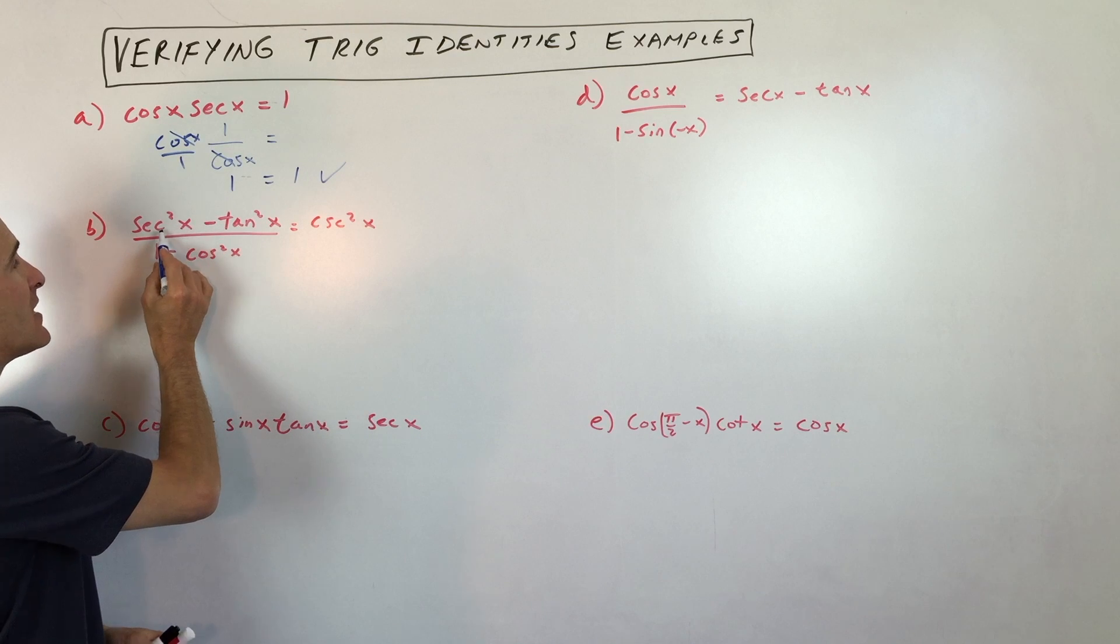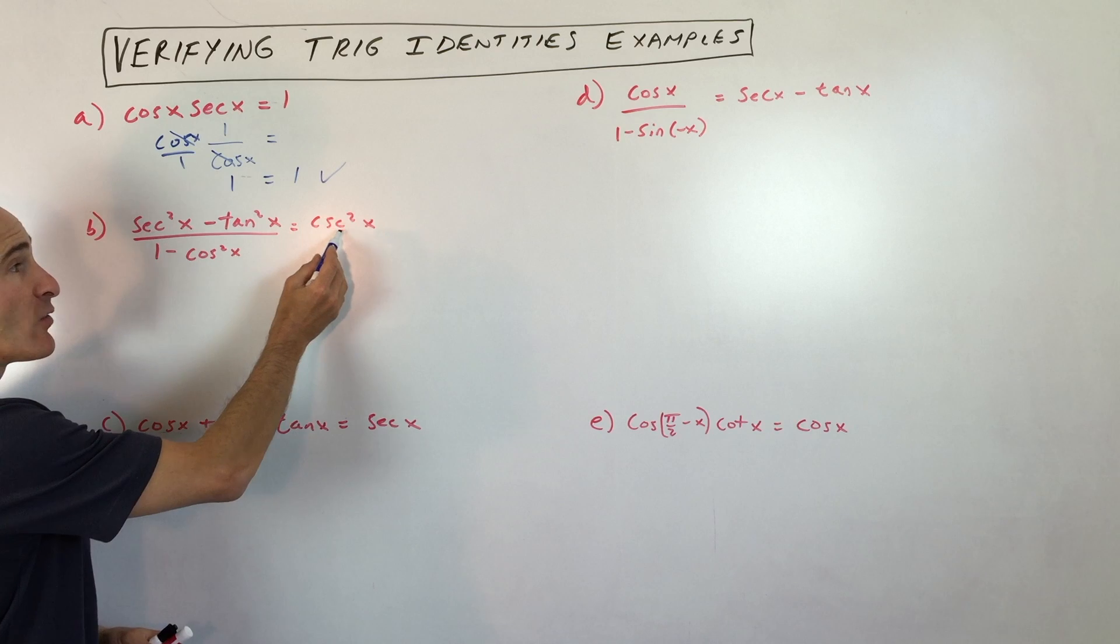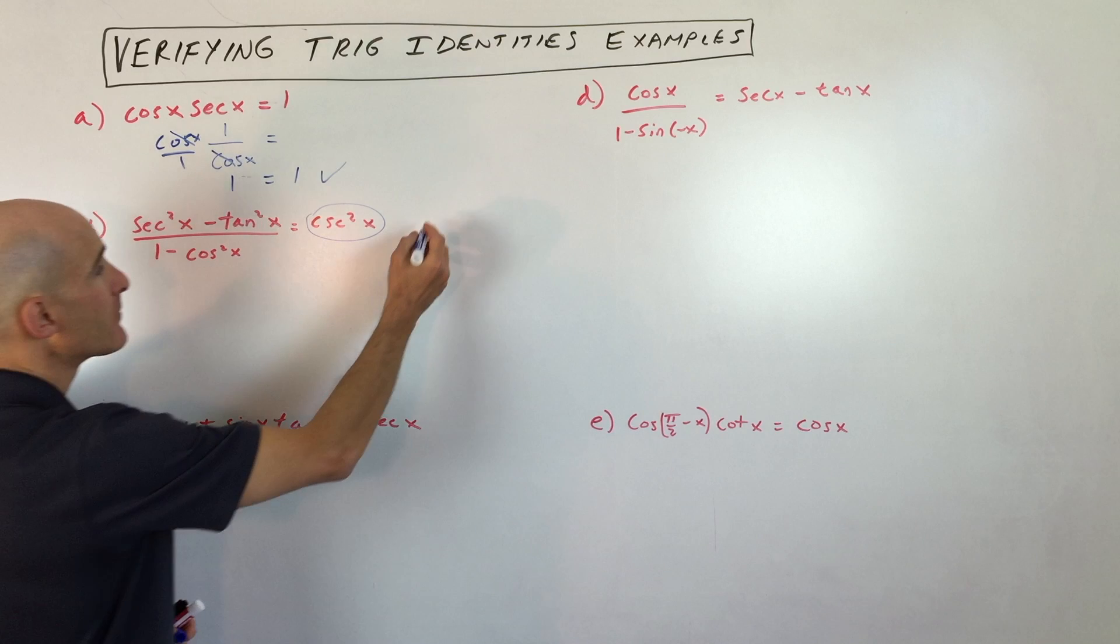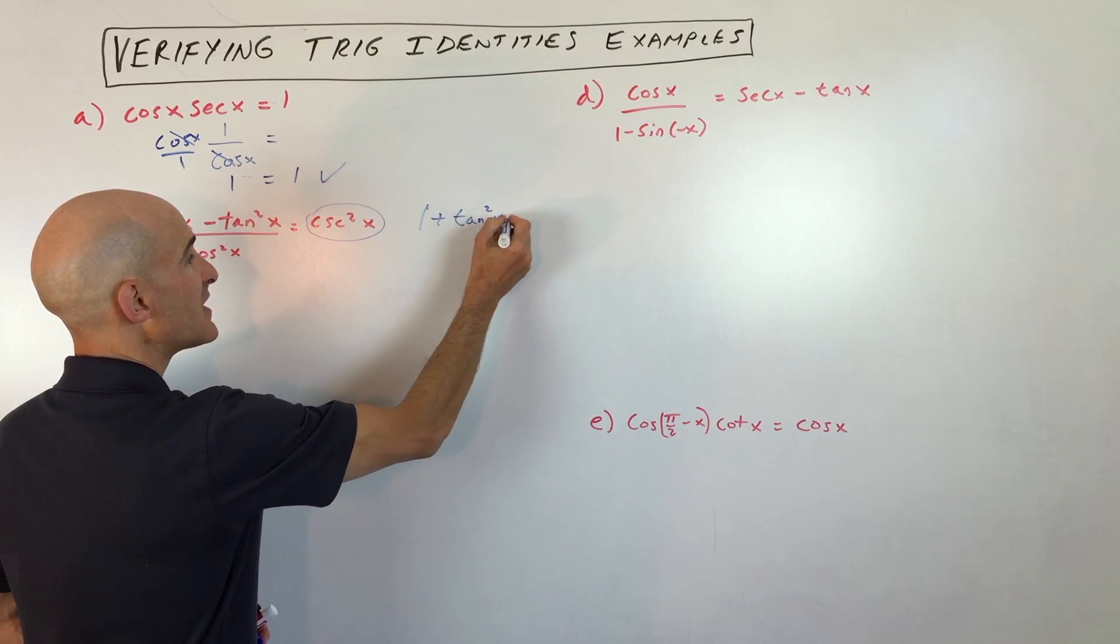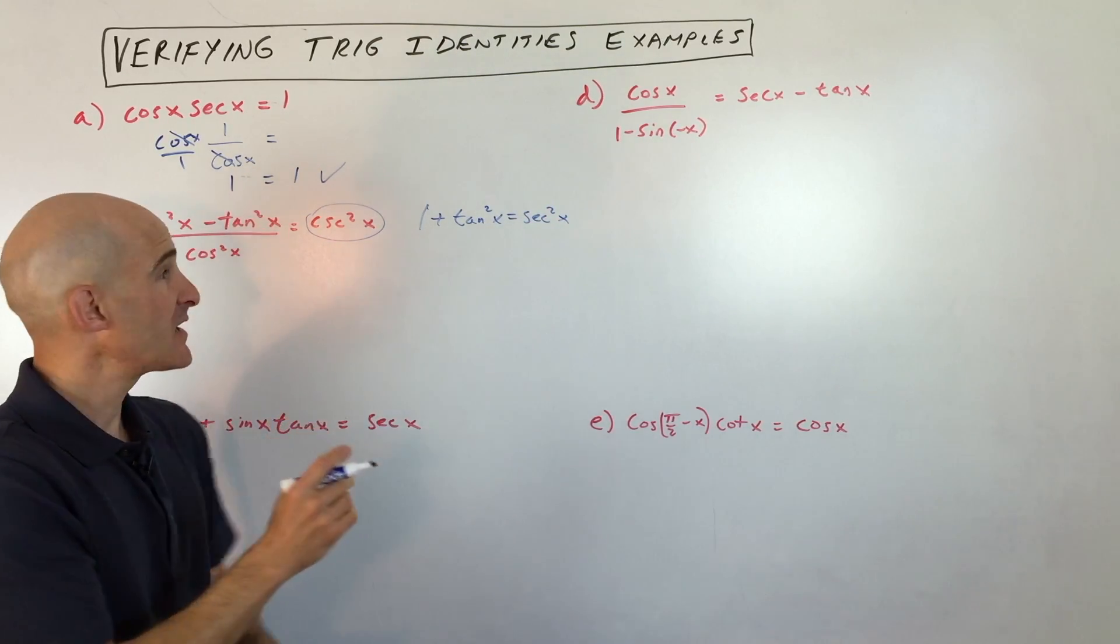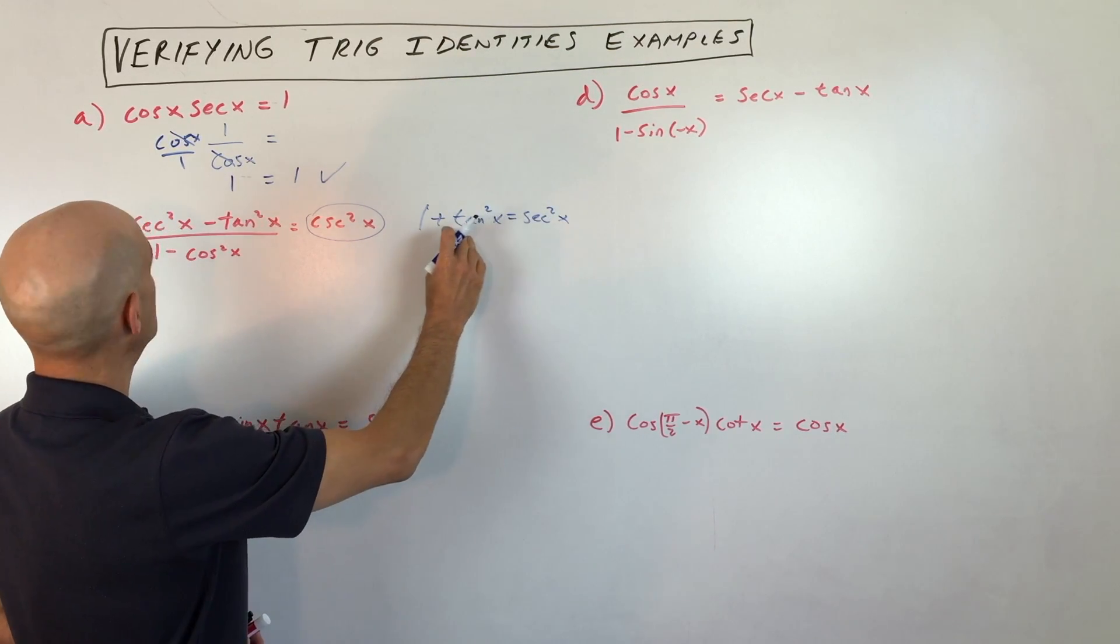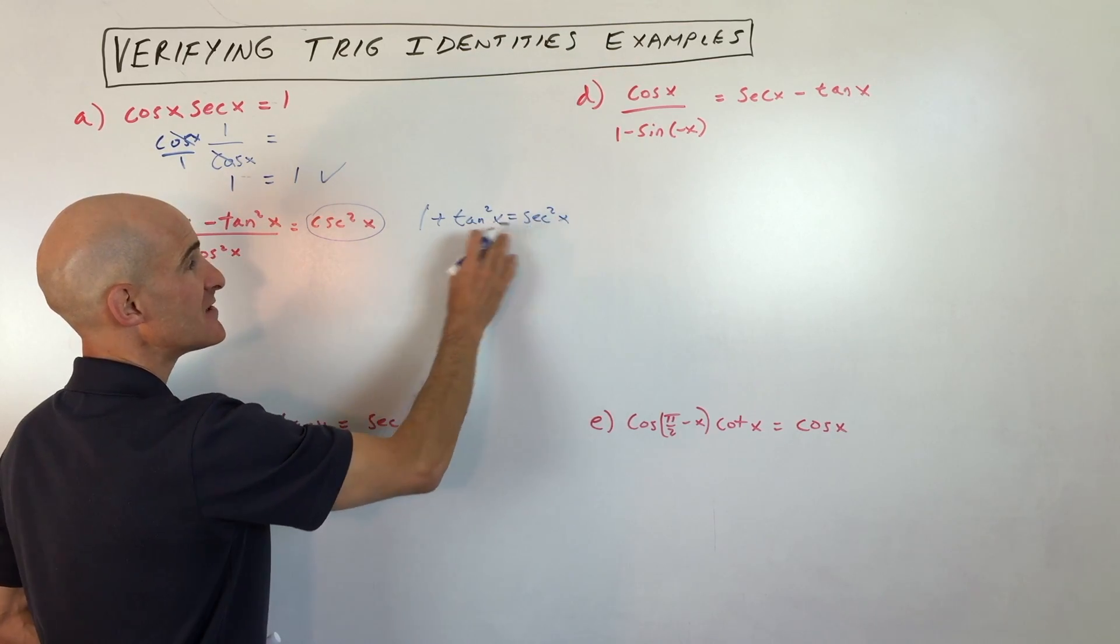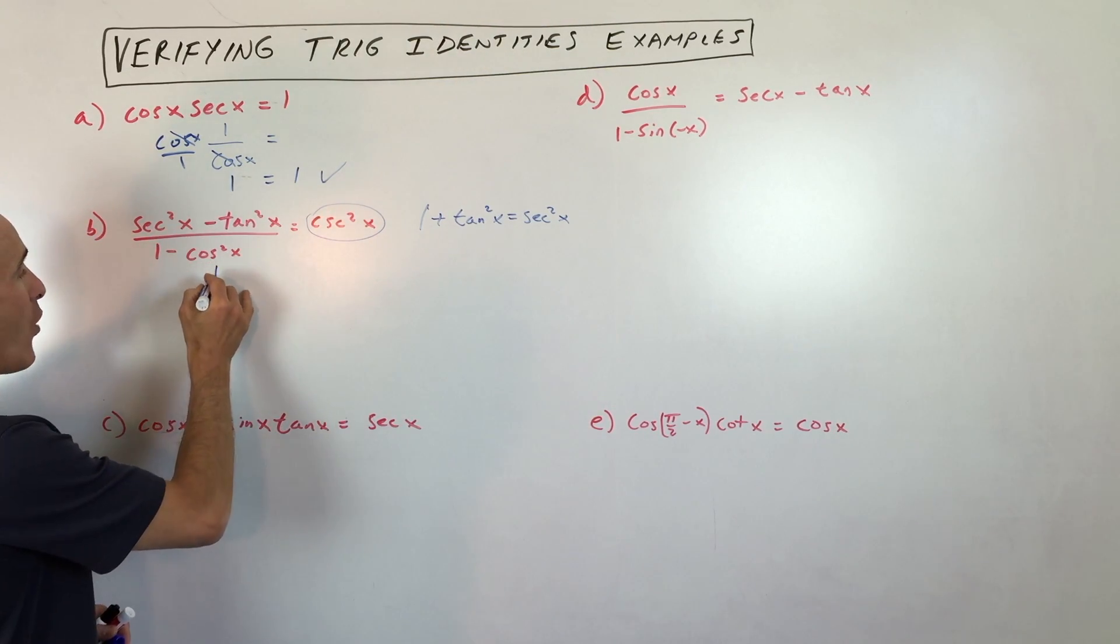Let's take a look at this one here. Secant squared x minus tangent squared x over 1 minus cosine squared x. We're trying to show that it equals cosecant squared x. Now, just a little side note over here. You probably remember this Pythagorean trig identity: 1 plus tangent squared equals secant squared. Now, you can rearrange that trig identity. So we're going to take secant squared, subtract tangent squared, and if we move that to this side, you can see that secant squared minus tangent squared equals 1. So this numerator is equal to 1.